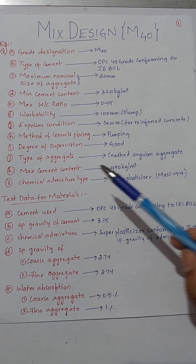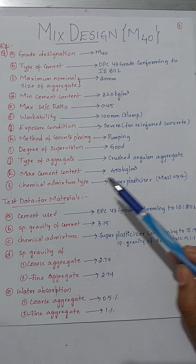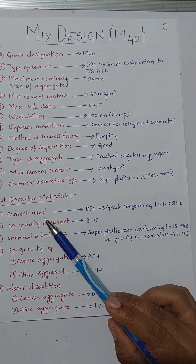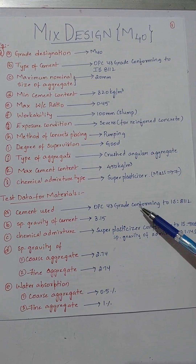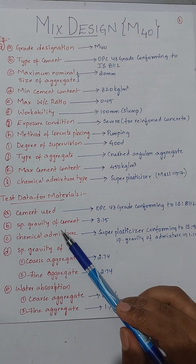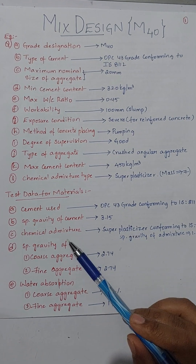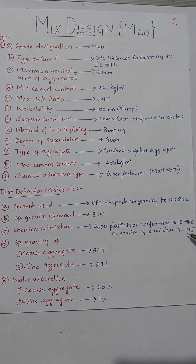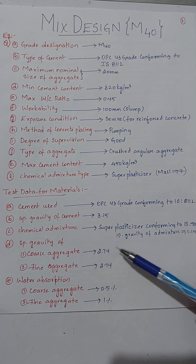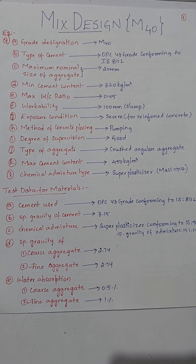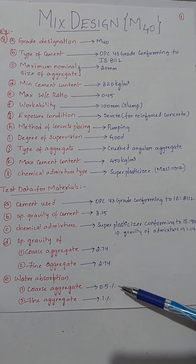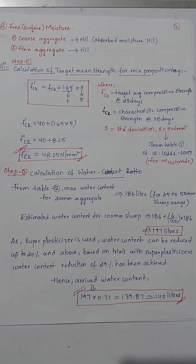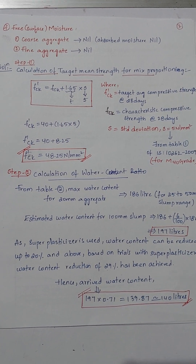The minimum cement content is 320 kg per meter cube. The chemical admixture used here is super plasticizer and the mass of super plasticizer is 7, and cement used is OPC 43 grade conforming to IS 8112. Specific gravity of cement is 3.15, specific gravity of super plasticizer is 1.145, specific gravity of coarse aggregate is 2.74, and for fine aggregate also 2.74. Water absorption for coarse aggregate is 0.5 percent and fine aggregate is 1 percent. Free surface moisture for coarse aggregate is nil and for fine aggregate also nil.